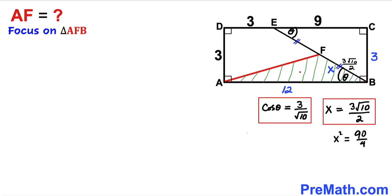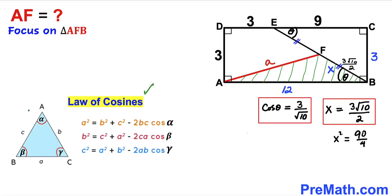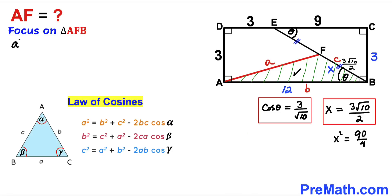Now let's focus on triangle AFB and find side length AF, which I'll label A. The other sides of this triangle are AB = 12 and FB = 3√10/2. Recalling the law of cosines for triangle AFB with sides A, B, C and angle theta, we apply: A² = B² + C² − 2BC·cos(θ), where B = 12, C = 3√10/2, and the angle is theta.